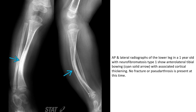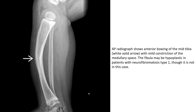AP and lateral radiograph of the lower leg in a one-year-old with neurofibromatosis type 1 showing anterolateral tibial bowing with associated cortical thickening. No fracture or pseudarthrosis is present at this time. AP radiograph of anterior bowing of the mid-tibia, with marked constriction of the medullary space. The fibula may be hypoplastic in patients with neurofibromatosis type 1, though it is not in this case.